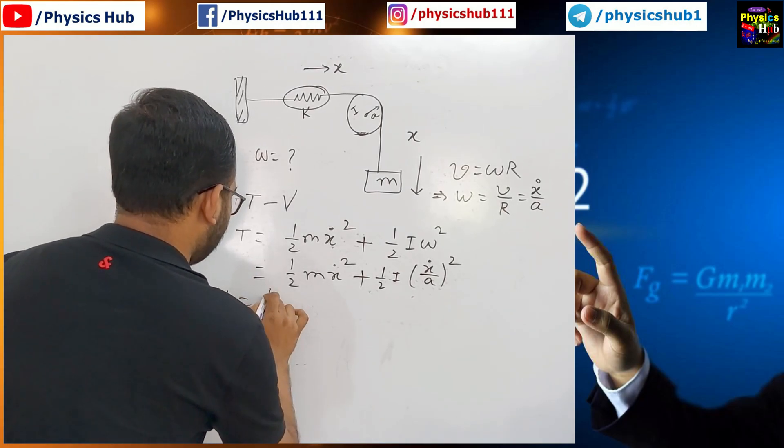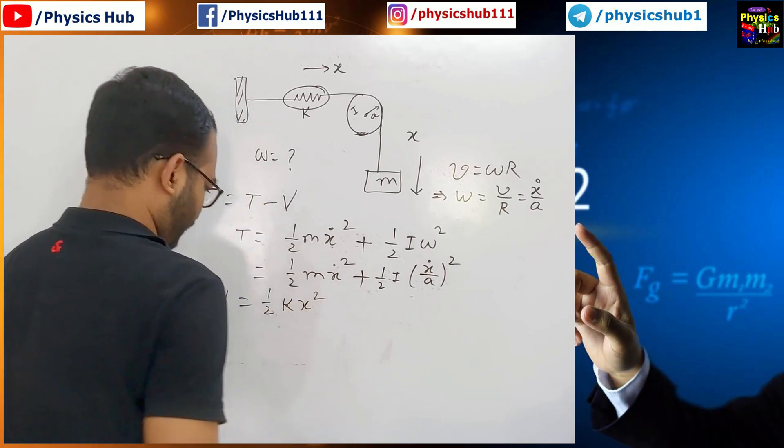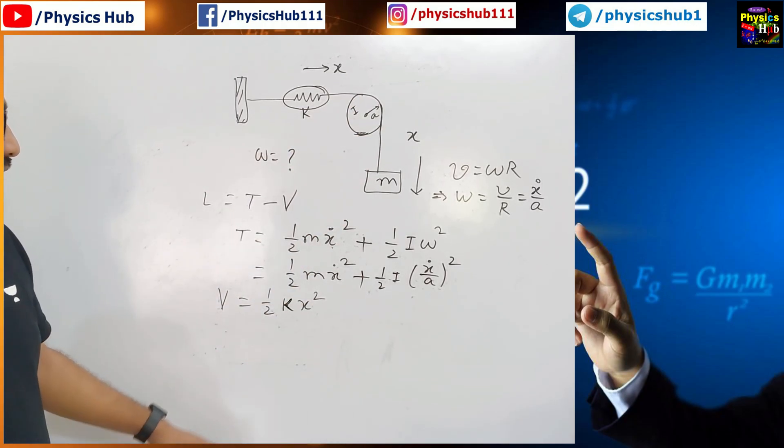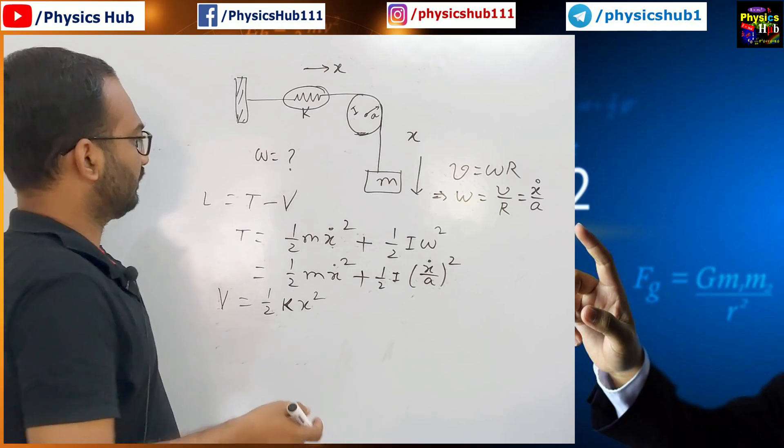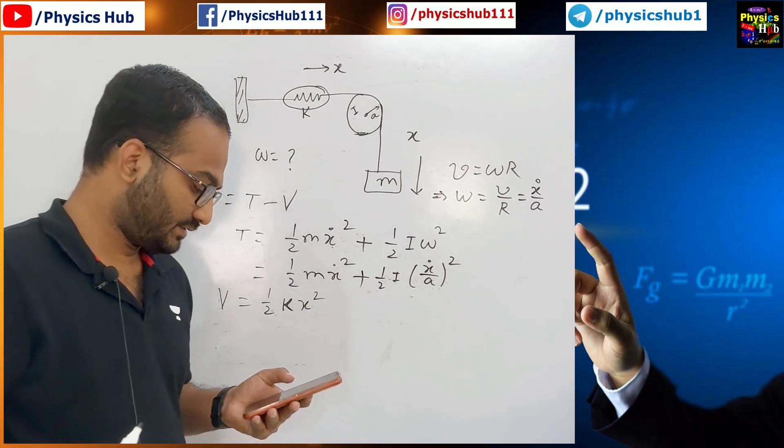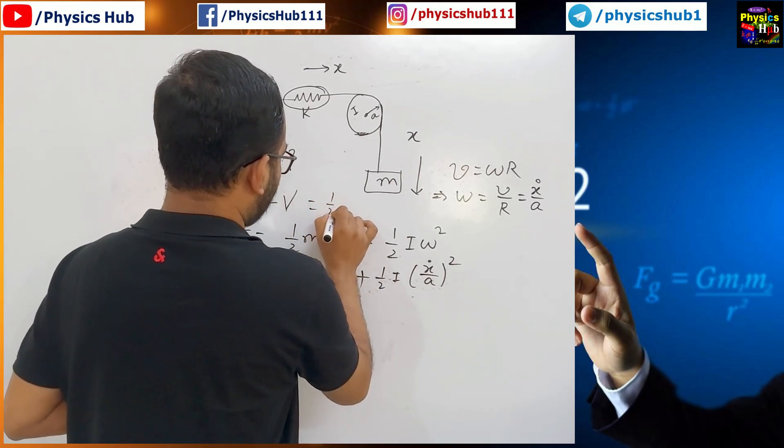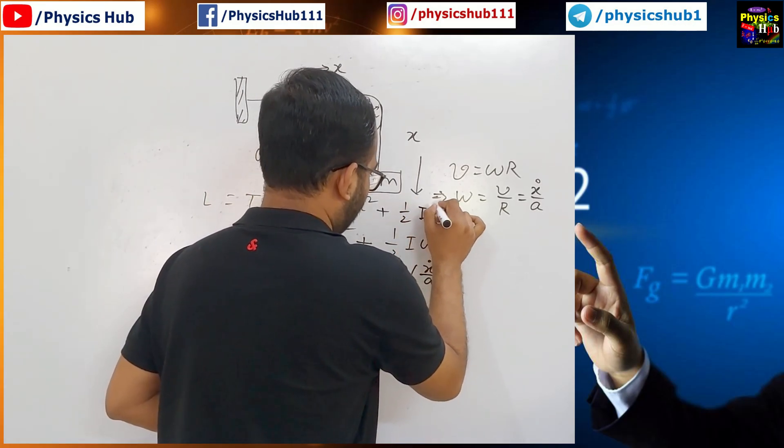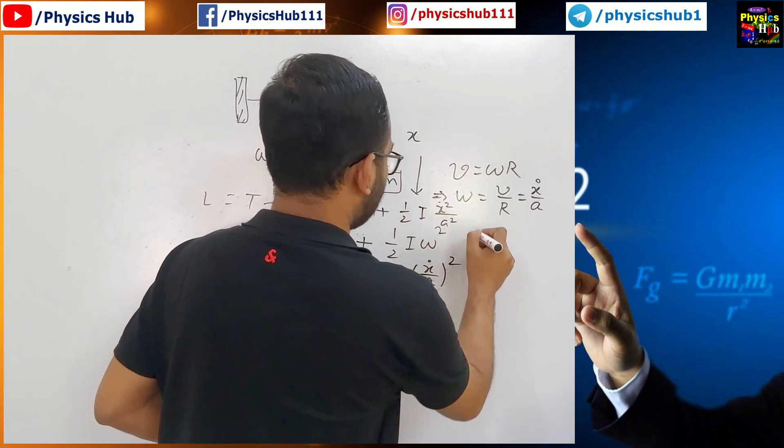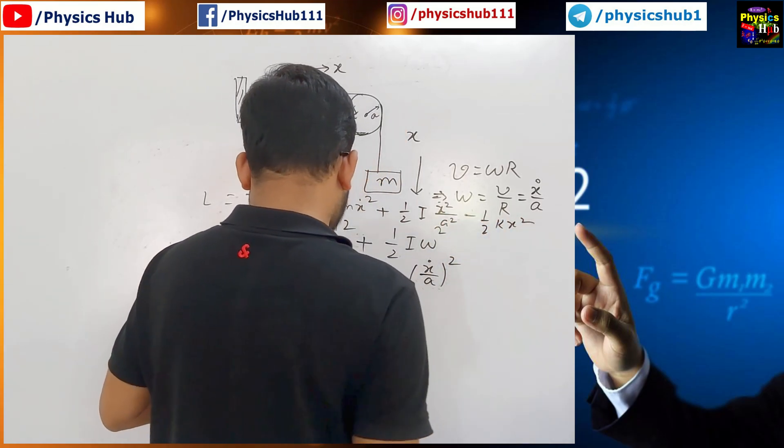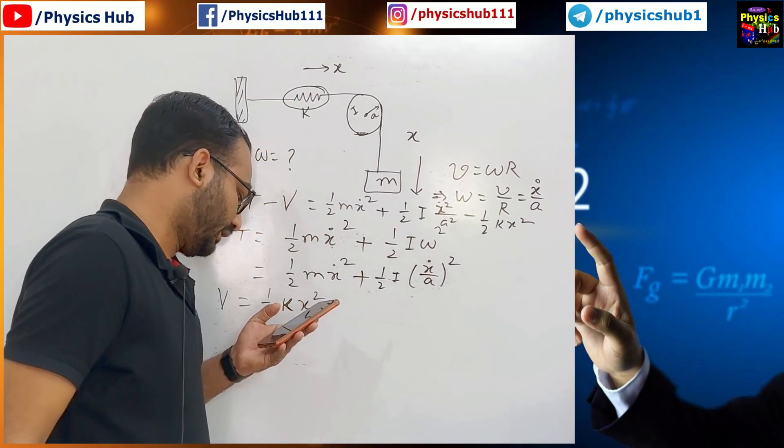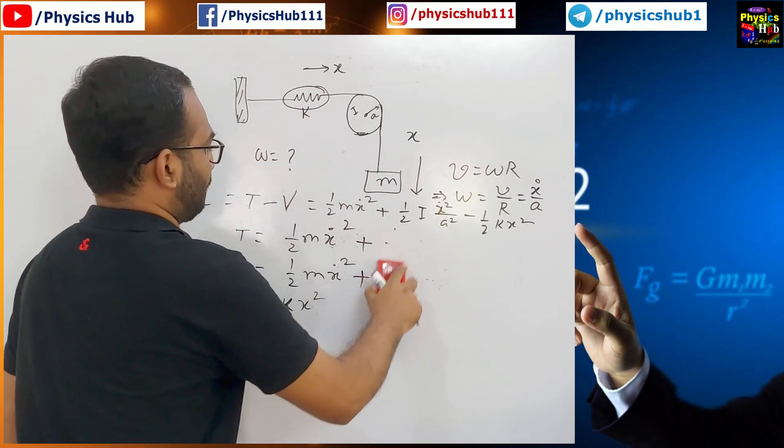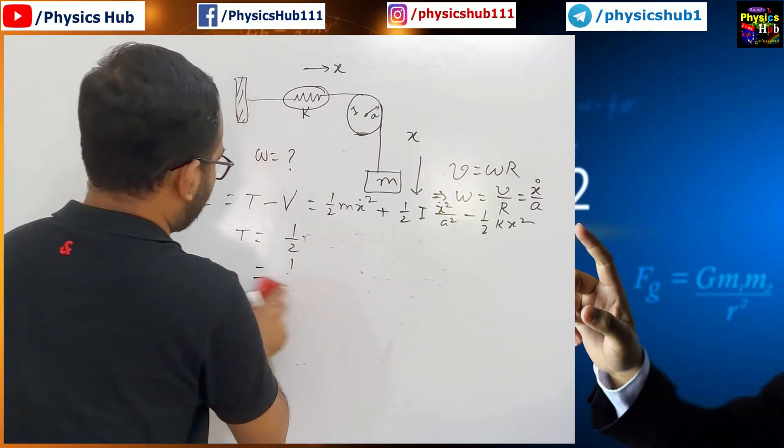What is the potential energy V? V is half K x square. The elongation, change in length in this spring length is stored as the potential energy. So, half K x square. So, we have calculated L equals T minus V. So, just put it here. So, what will it become? Half m x dot square plus half I x dot square by A square and minus V minus half K x square. So, this will be the thing. So, we have written the Lagrangian of the system. Till now, there is no issue.